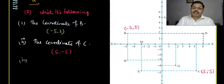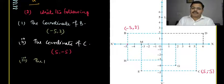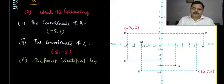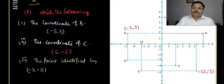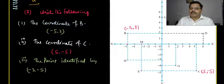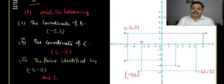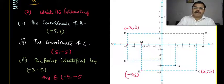The third part asks: what point is identified by the coordinates (-3, -5)? Looking at the graph, x = -3 and y = -5 correspond to point E. So the answer is point E, which is represented by (-3, -5).